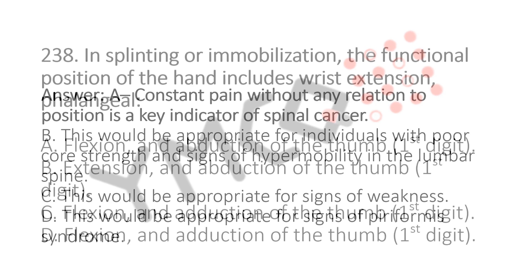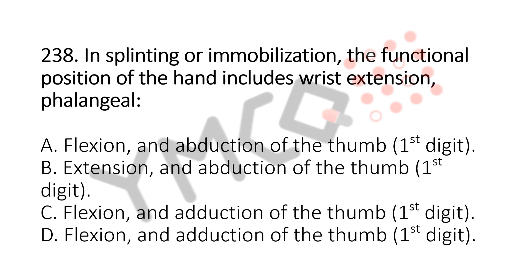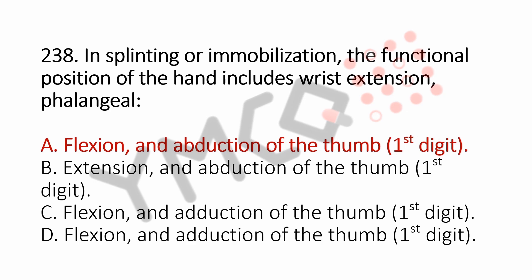Now let's move to question number 238. In splinting or immobilization, the functional position of the hand includes wrist extension and phalangeal — Option A: Flexion and abduction of the thumb, first digit. Option B: Extension and abduction of the thumb, first digit. Option C: Flexion and adduction of the thumb, first digit. Option D: Flexion and adduction of the thumb, first digit. And the answer is Option A: Flexion and abduction of the thumb, first digit.